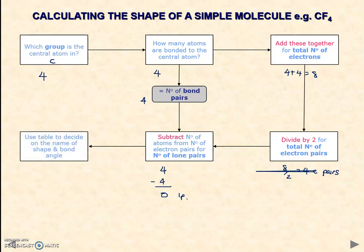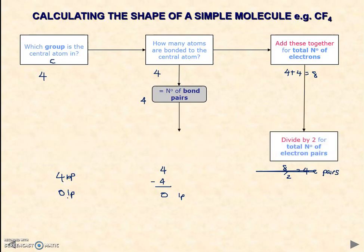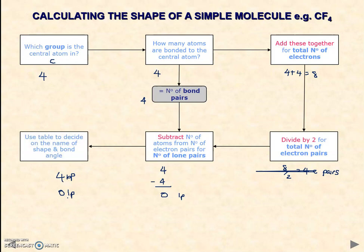Then you would go back to the table and say, I'm looking for a shape which has got four bond pairs, zero lone pairs. If you go back to your table, then you will see that that shape is tetrahedral. So that's the rules you apply if you've got a simple molecule.